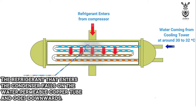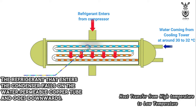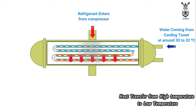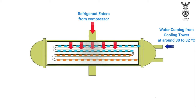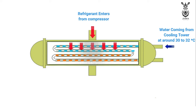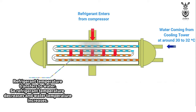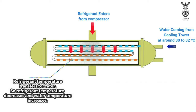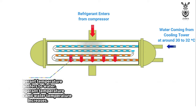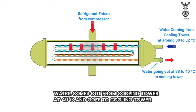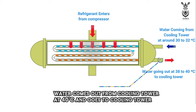As per the thermodynamics law, high temperature travels towards low temperature. So, the heat of the refrigerant which flows around the copper coil will transfer to the water which flows inside the copper coils, because the refrigerant temperature is higher than the water temperature. So the water temperature will increase, and the water comes out from the condenser at 40 degrees Celsius.